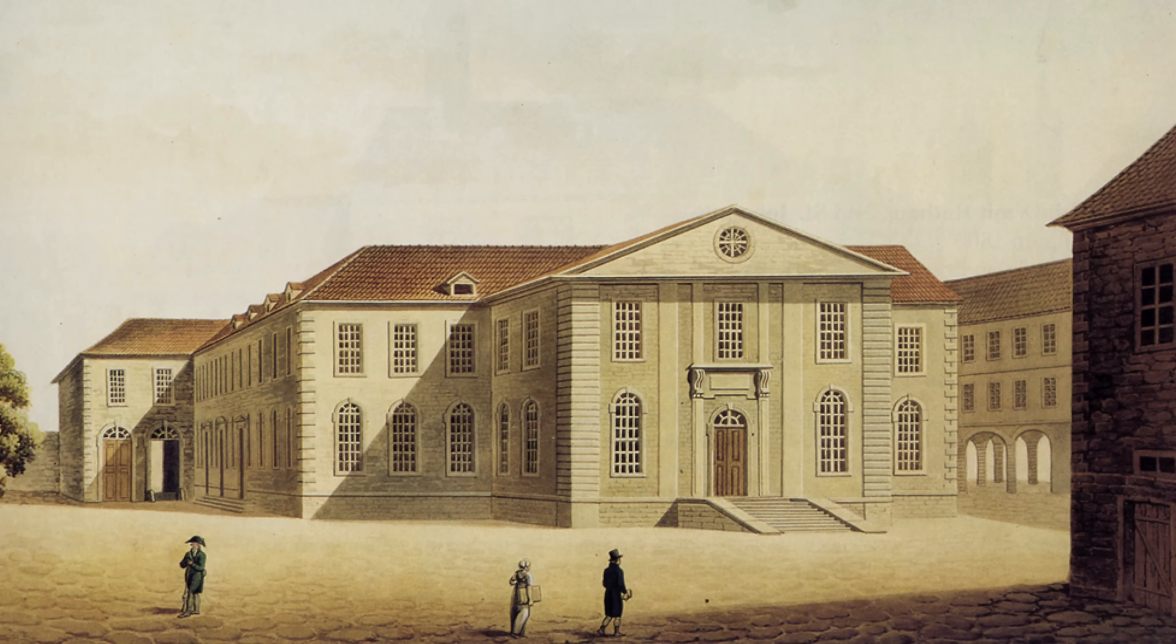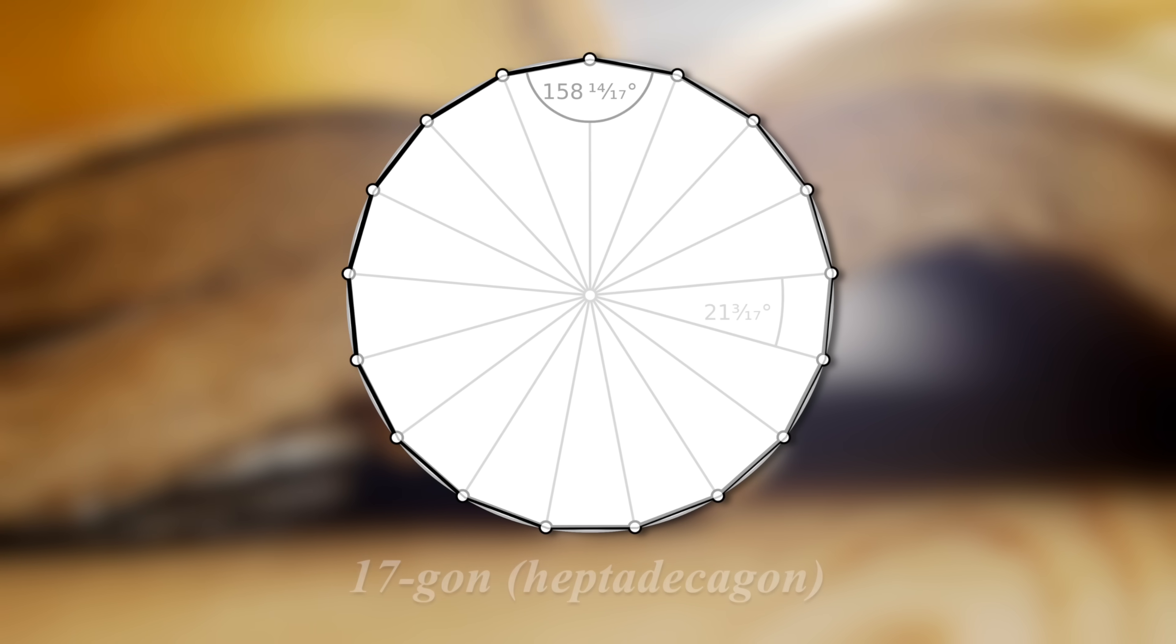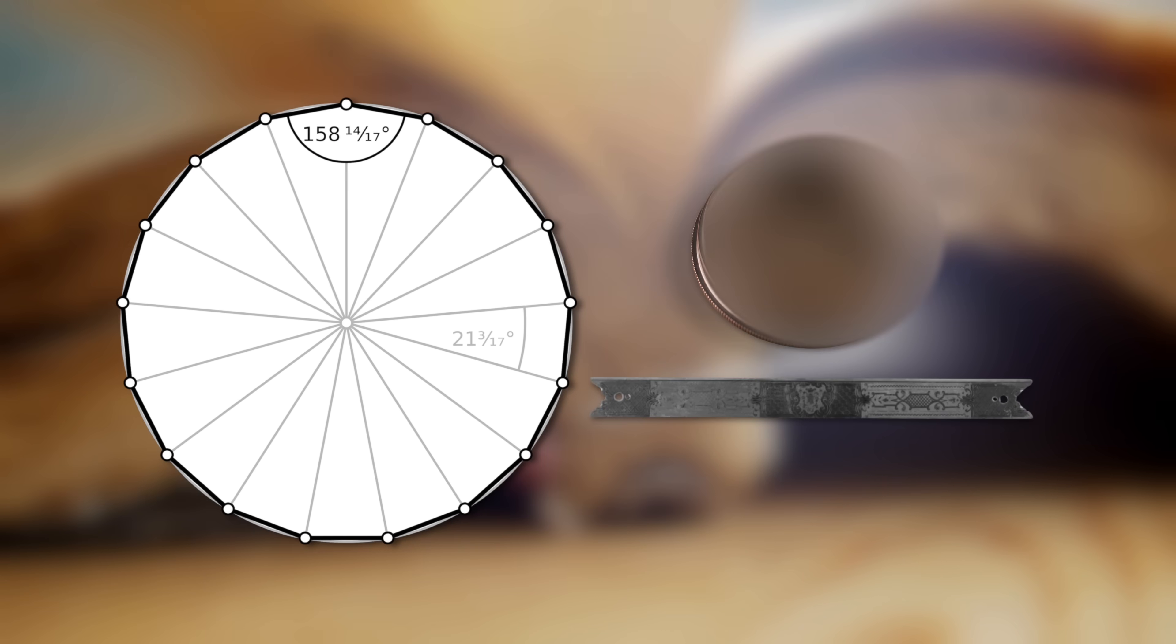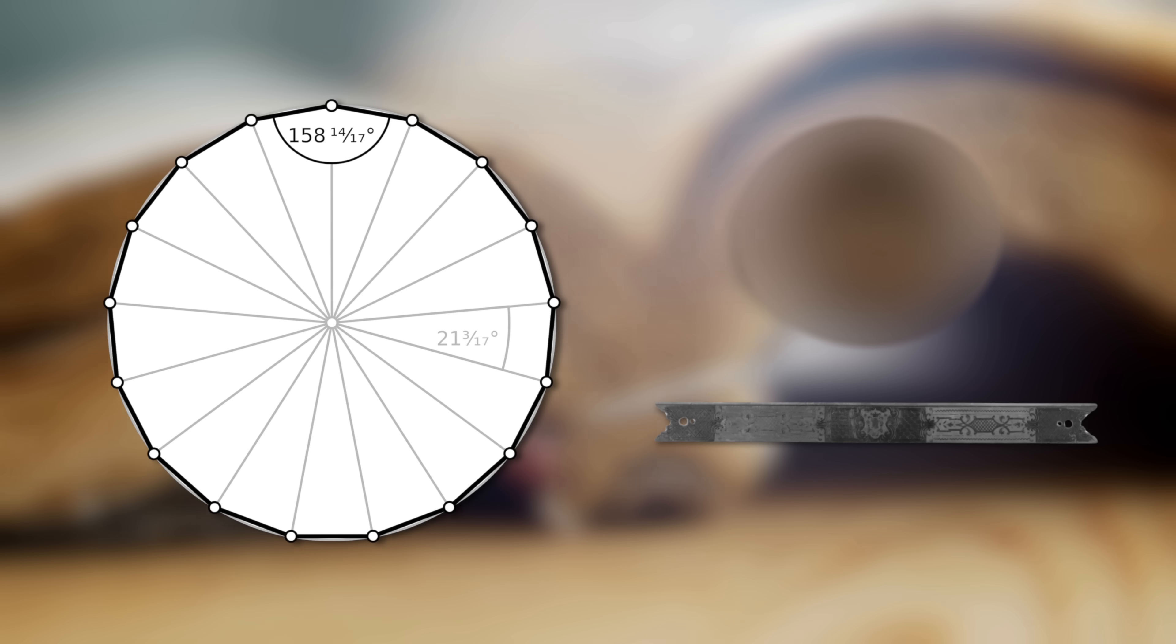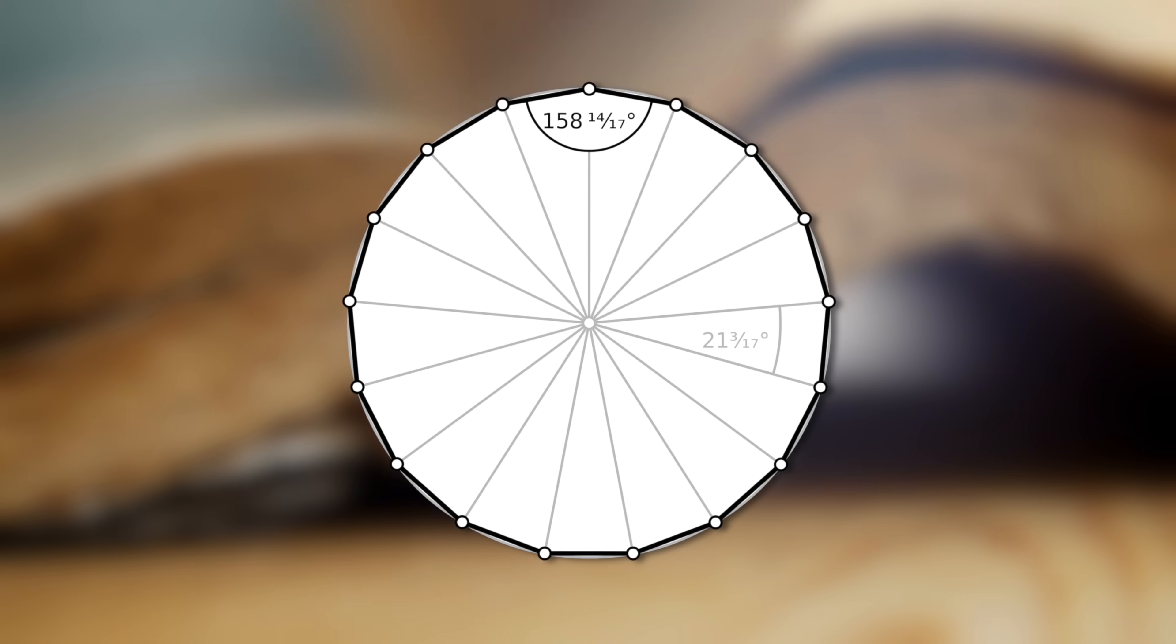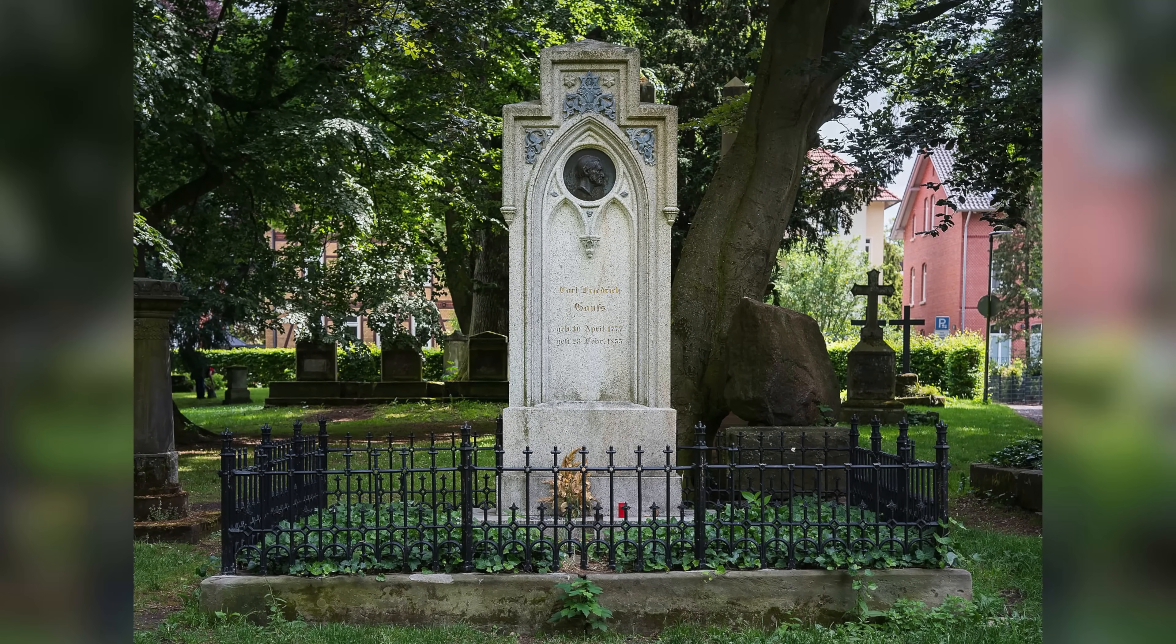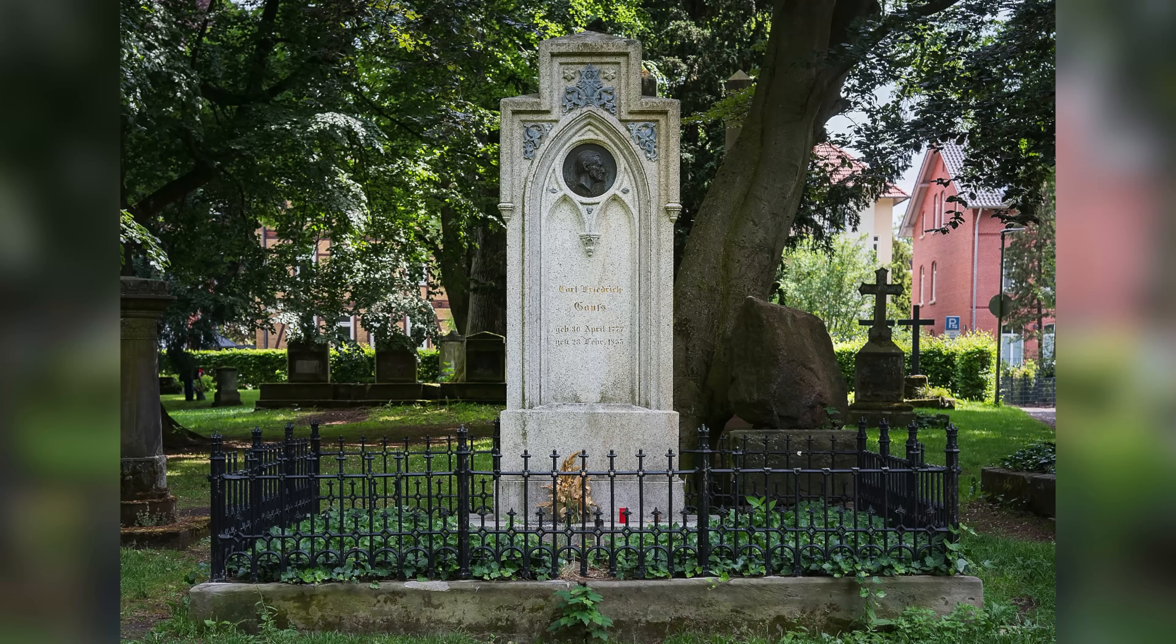While he loved learning languages there, easily picking up Latin, Greek, French, and English, his greatest passion was math. Carl proved that a regular 17-gon can be constructed using only a compass and a straight edge, a tool for drawing straight lines without any measurements. This was incredibly challenging as it required precise geometric techniques without the aid of modern tools. He wished to have a regular 17-gon engraved on his tombstone, but the stone carver refused, fearing people might mistake it for a poorly carved circle.